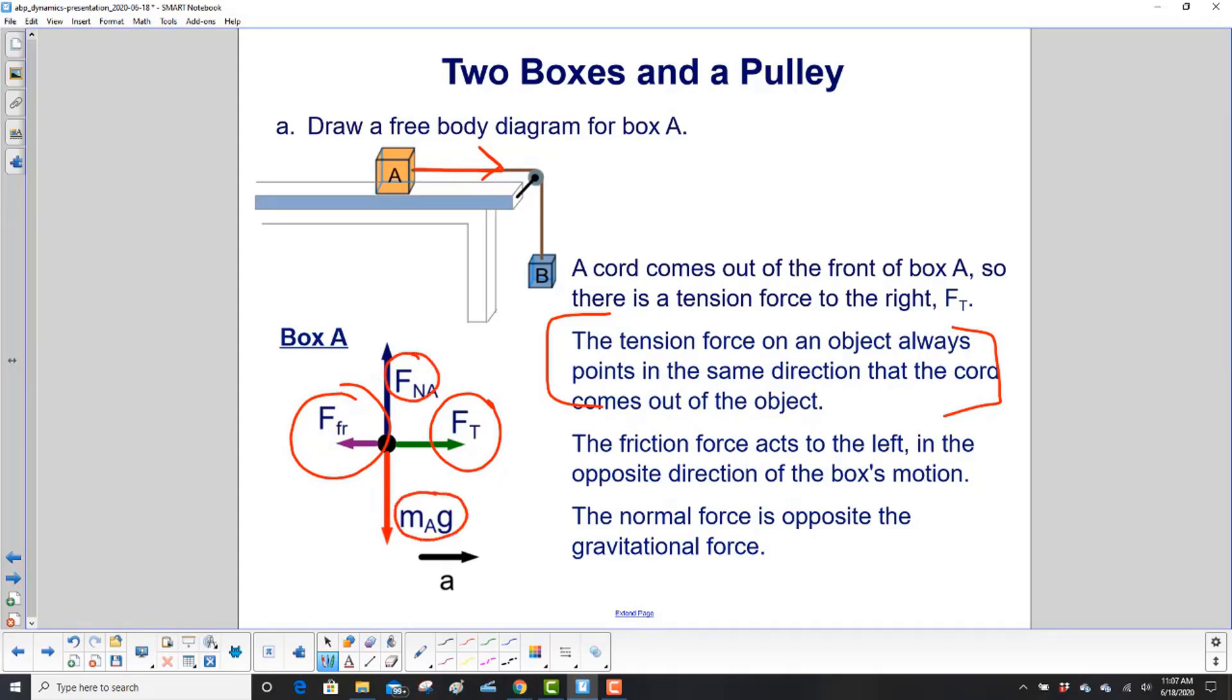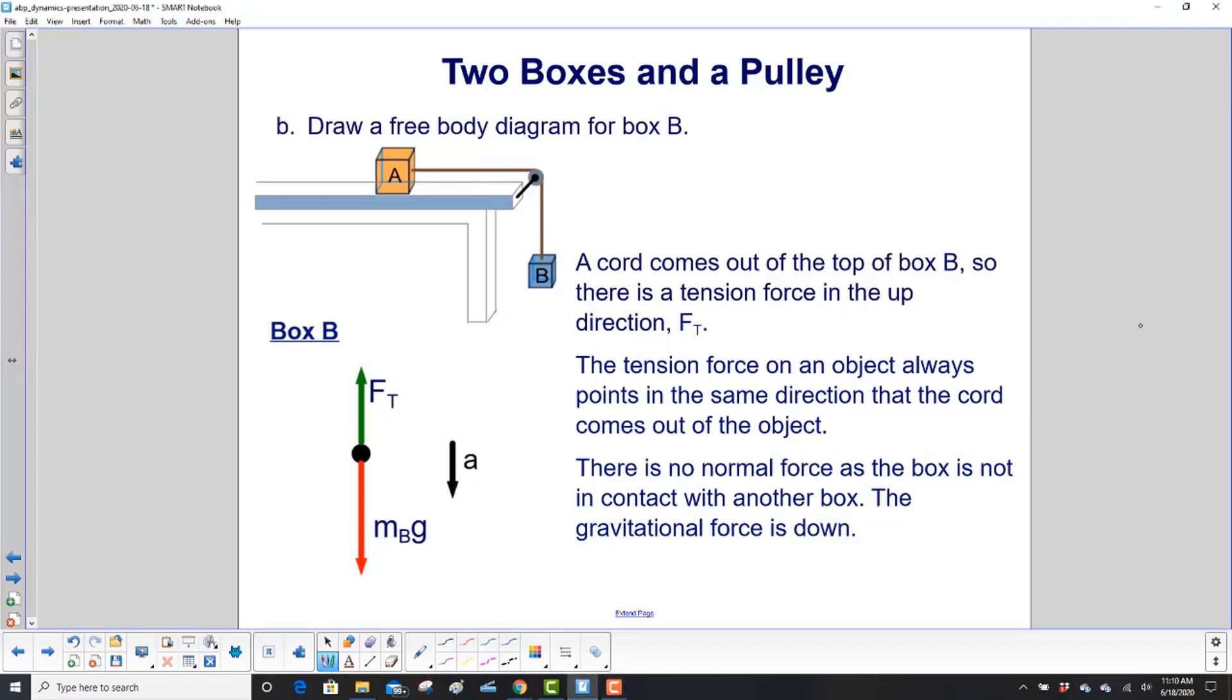Which way is this box moving? To the right, so our acceleration we expect it to be to the right. Let's move to box B. A cord comes out of the top of box B, so there is a tension force in the up direction, F sub T.